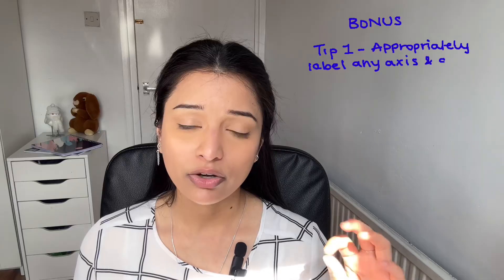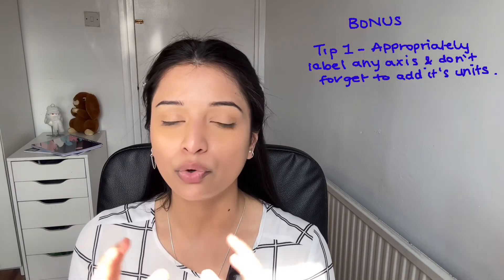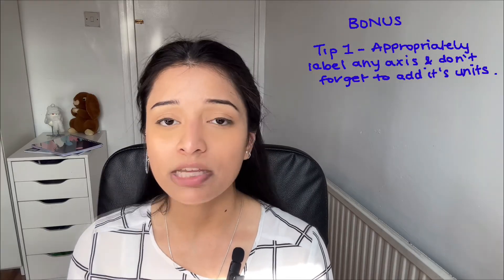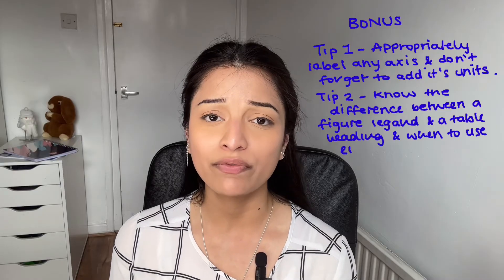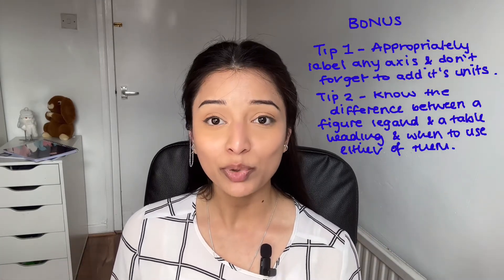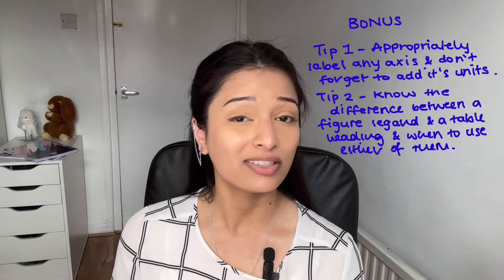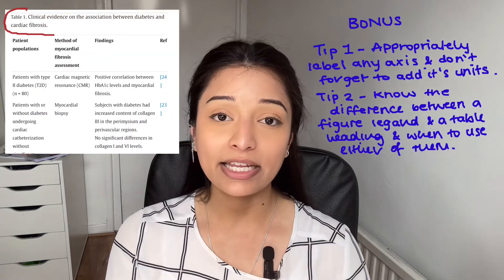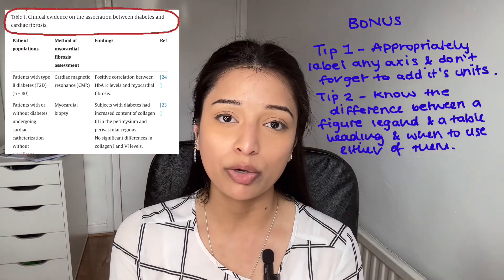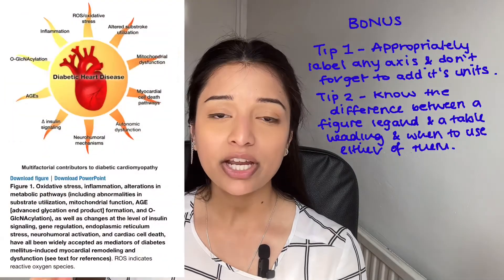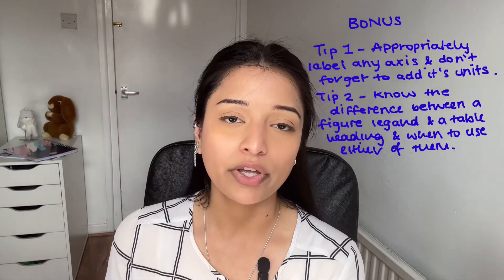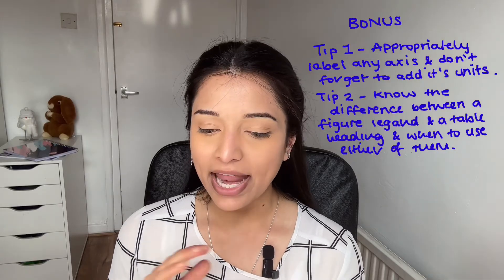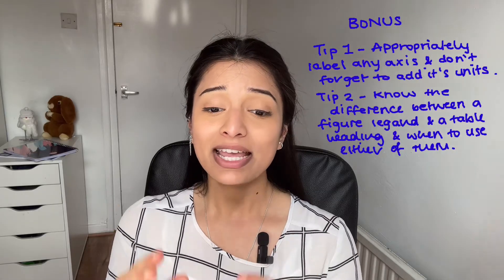Some tips to take home: number one — when doing your results section, make sure you're correctly labeling your axes. Check how you've labeled them and whether units have been included. Number two — know when to use a figure legend and when to use a table heading, as many people misunderstand this. A table heading is usually above the table and is a brief description of what the table presents. A figure legend, on the other hand, demonstrates what graphs or diagrams illustrate and is usually underneath the diagram or graph. Also make sure any tables, charts, or graphs you've used are actually referenced in your text.